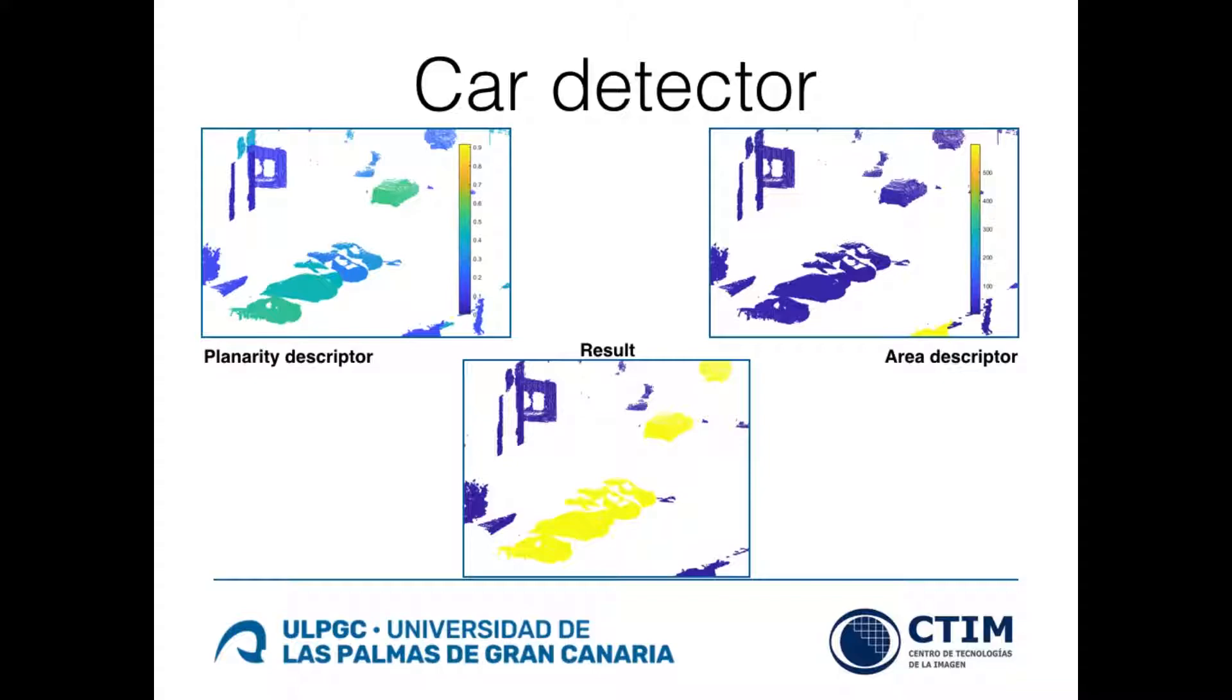For car detection, an eigensum feature map is used to discriminate the points to be analyzed. After a clustering of such points, planarity and area descriptors are computed per cluster in order to determine whether they represent cars or not.